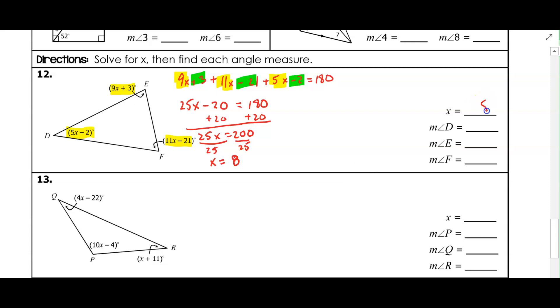All right, so we have x is 8. Now, if you notice, they want us to find the measure of angle D, E, and F. So they want us to find the three angles of the triangle.